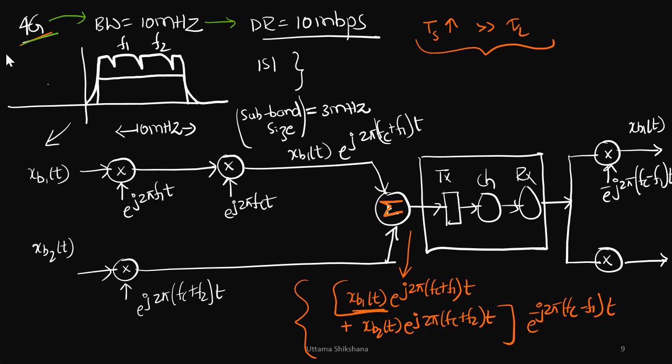So when such a large bandwidth is used, the observation is the channel was not flat for the complete 10 megahertz. The reason was there was severe ISI. So how to overcome this ISI? One of the approaches that we saw in the previous video was to divide this entire bandwidth into subbands.